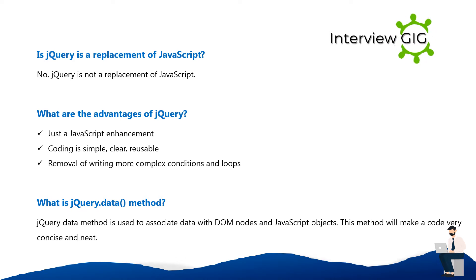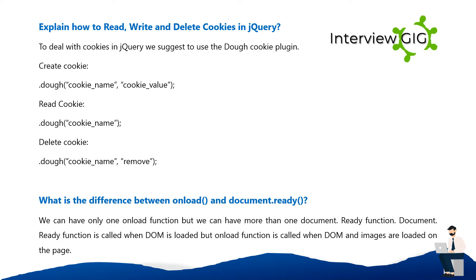It also removes the need for writing more complex conditions and loops. What is the jQuery.data() method? The jQuery.data() method is used to associate data with DOM nodes and JavaScript objects. This method makes code very concise.